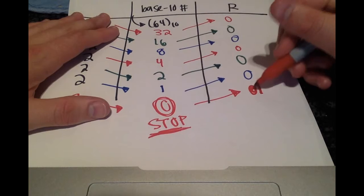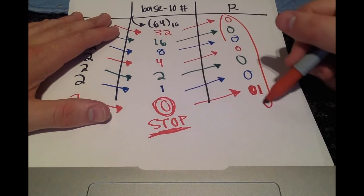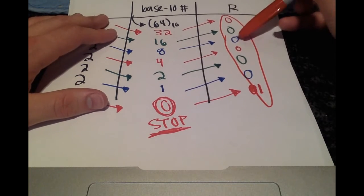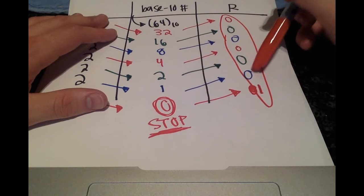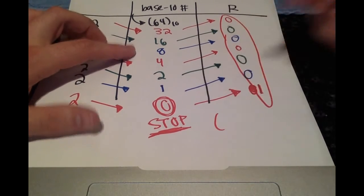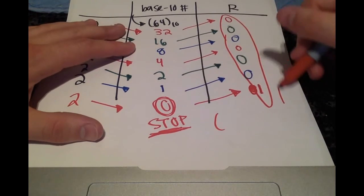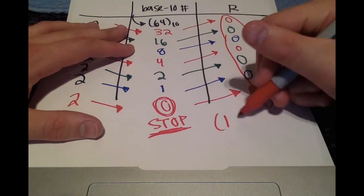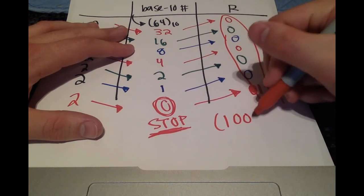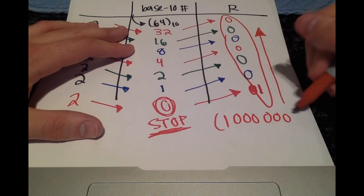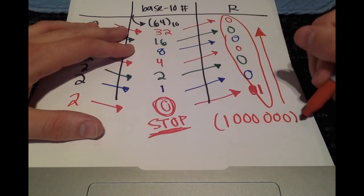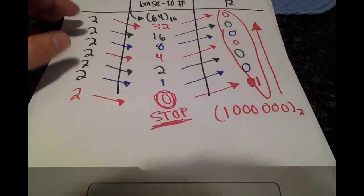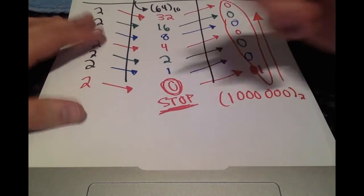When you reach 0, that is our indication to stop dividing by 2. Circle the vertical column: 0 0 0 0 0 0 0 1. Writing that backwards gives us 1 0 0 0 0 0 0 0 with subscript 2.